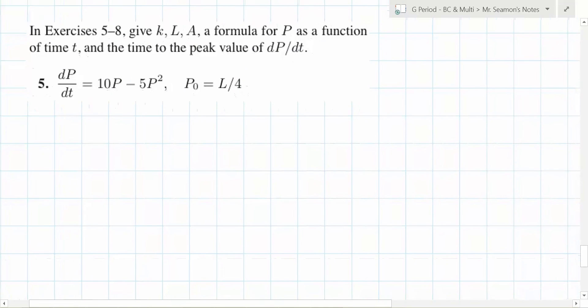What about this one, though? You've got to find K, L, A, a formula for P as a function of T. So what do you first notice about how this differential is written? Yeah. Exactly. They kind of multiplied it out. So what do we have to do? Factor. We do factoring in Algebra 2 today. We do factoring in BC. We do factoring all over the place. So what do we want to turn this into? 10P times 1 minus P over 2. Is that correct? I think it's correct. So what does that tell us K is? 10. It tells us L is what? 2. And do they give us a P0 on this one? Well, it tells us it's L over 4.